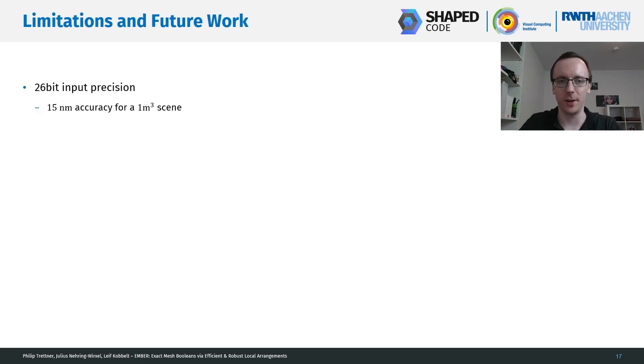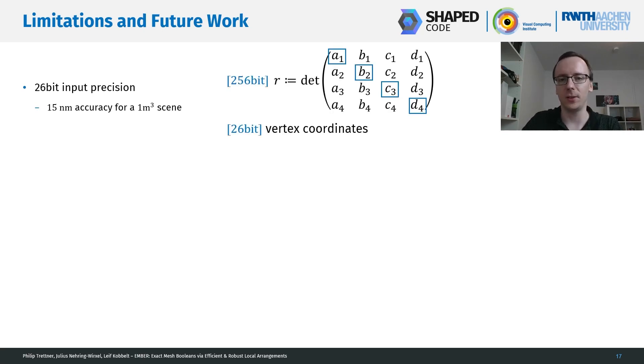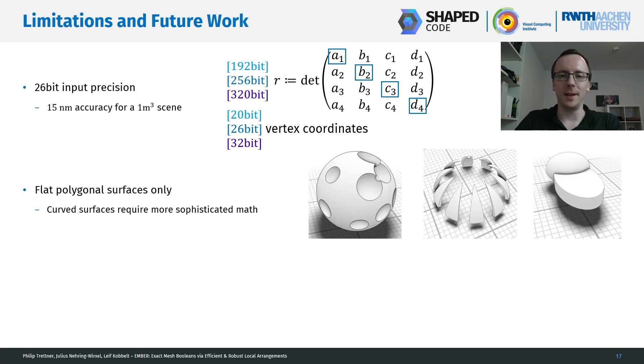Let's briefly talk about future directions. Our current prototype uses 26-bit of input precision, which translates to roughly 50 nanometers of accuracy on a 1-meter cubed scene. This can be adjusted based on the use case, so we could use less or more bits, which increases or decreases the performance. As we're working in a plane-based geometry paradigm, we can only support flat polygonal surfaces with our current method. Efficient and exact intersections between curved surfaces is an interesting topic for future work.